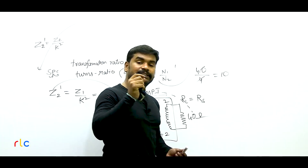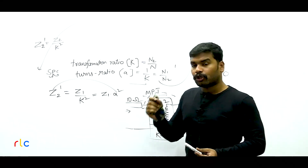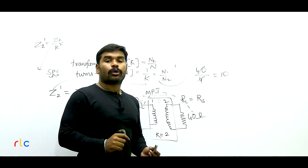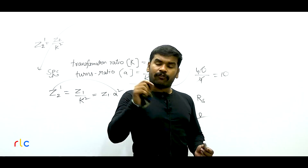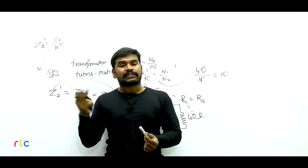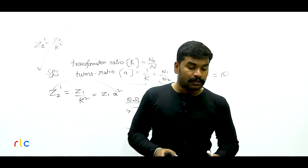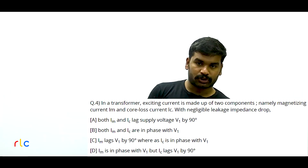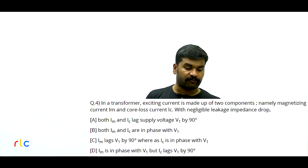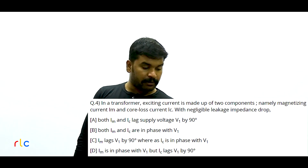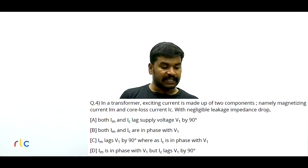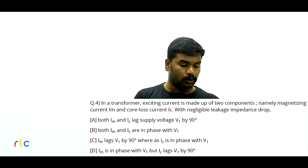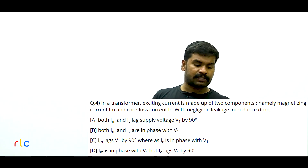The phasor diagram confirms: with V1 as reference, IM is 90 degrees lagging and IC is in phase with V1. The resultant of IM and IC is I0. Option C is the right answer. Next question: A 400/200 volt transformer has a total resistance of 0.02 per unit on the LV side. This resistance when referred to the HV side would be?